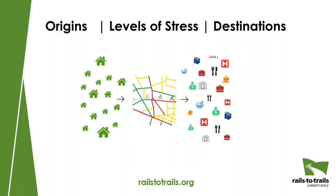This traffic stress concept is several decades old and has been applied in Europe for quite a while, and it's recently gained more attention among researchers and planners in the U.S. The embrace of this concept in the new Federal Highway Administration guidance is really great to see — it's going to help planners make this the norm in American transportation planning. Now we can use this model to tell which residences are connected by low-stress routes to which destinations, and conversely, which are disconnected and not reachable except by intolerably stressful biking routes.